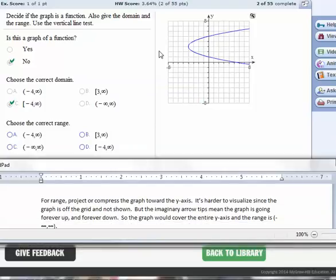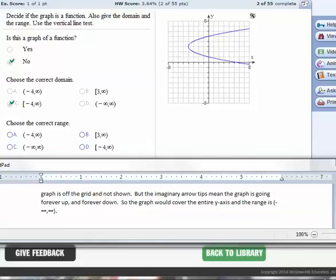For the range, we compress the graph toward the y-axis. That's harder to visualize since the graph is off the grid and it's not shown. But these imaginary arrow tips, that should be there, mean the graph is going forever up and forever down. So the graph would end up covering the entire y-axis forever up and forever down. But from lowest to highest, that would be from negative infinity to positive infinity.